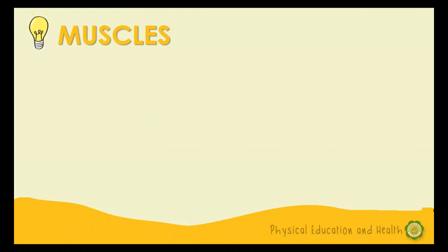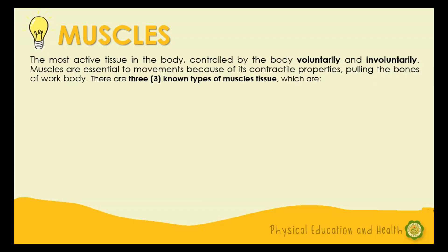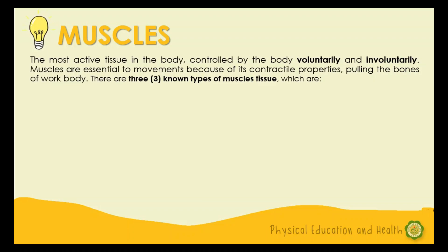Now let's proceed to the next topic. So, ano nga ba yung muscle? Muscle is responsible for movements — that's the main reason why we can stand, walk, and run. Muscle is the most active tissue in the human body, controlled by voluntary and involuntary muscles. Some muscles we can consciously control, like those in the arms and legs, and those are called voluntary muscles — they move according to what we want to do.